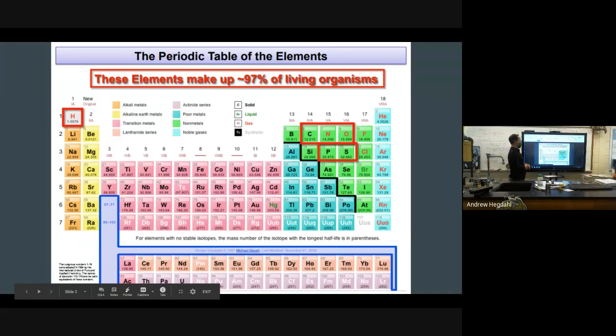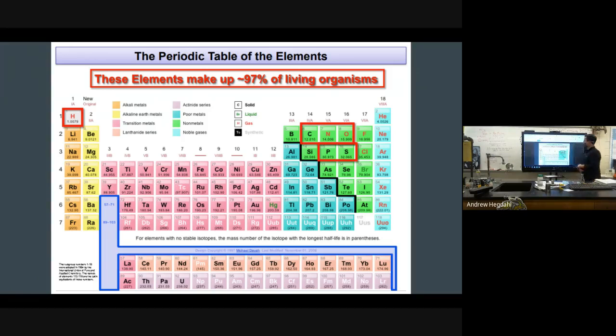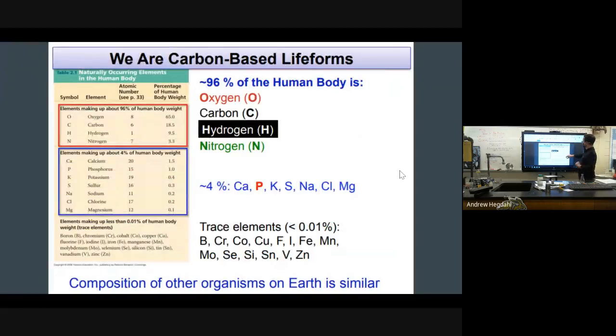So just some side facts before we get going here. 97% of living organisms are made out of just these elements. 90% of their body is made out of just these elements: hydrogen, nitrogen, oxygen, phosphorus, and sulfur. There are trace elements of other metals and non-metals, and we get those from primarily eating like fruits and vegetables or other organisms.